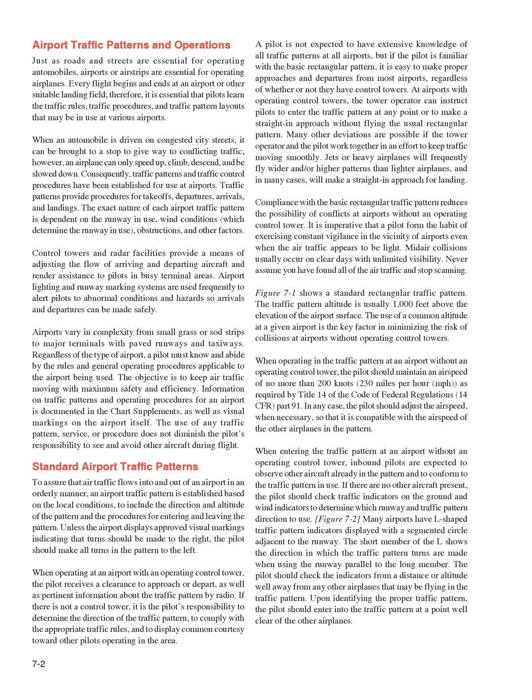When entering the traffic pattern at an airport without an operating control tower, inbound pilots are expected to observe other aircraft already in the pattern and to conform to the traffic pattern in use. If there are no other aircraft present, the pilot should check traffic indicators on the ground and wind indicators to determine which runway and traffic pattern direction to use. Many airports have L-shaped traffic pattern indicators displayed with a segmented circle adjacent to the runway. The short member of the L shows the direction in which the traffic pattern turns are made when using the runway parallel to the long member. The pilot should check the indicators from a distance or altitude well away from any other airplanes that may be flying in the traffic pattern.